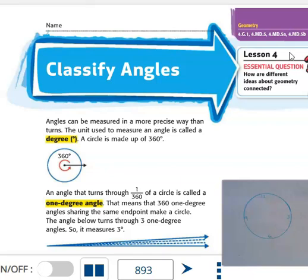We're on chapter 14.4. Our essential question is how are different ideas about geometry connected? Our lesson is classifying angles.